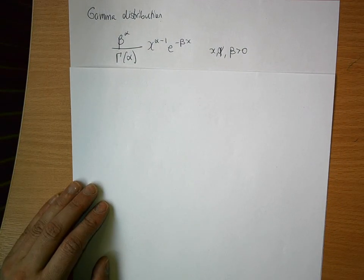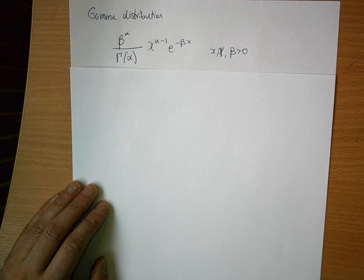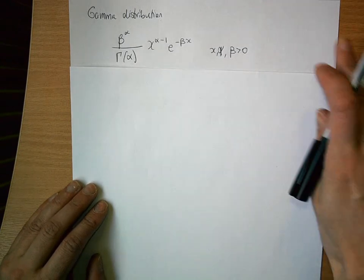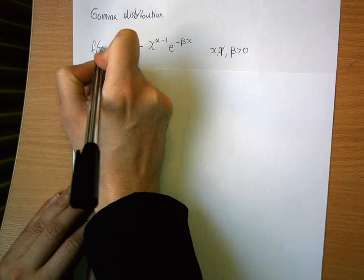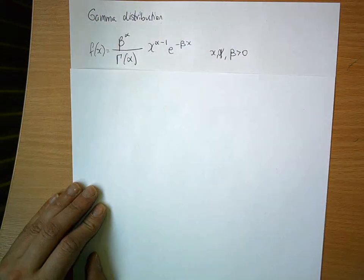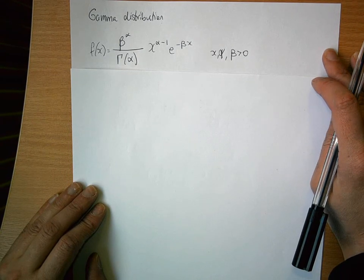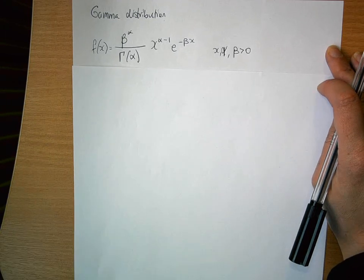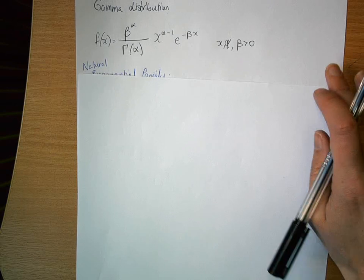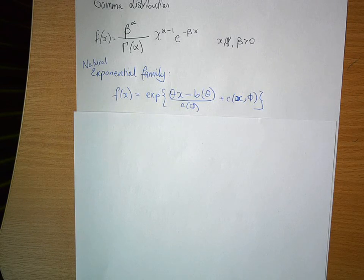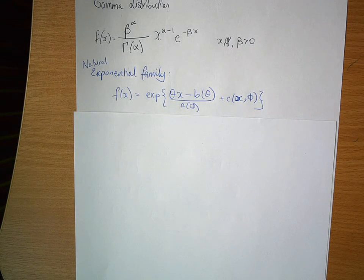Today we're going to show how to prove that the gamma distribution is a member of the natural exponential family of distributions. We're using the gamma distribution in this form: f(x) = beta^alpha / gamma(alpha) * x^(alpha-1) * exp(-beta*x), where x, alpha, and beta are all greater than 0. To show membership in the natural exponential family, you must be able to write the distribution as f(x) = exp( (theta*x - b(theta)) / a(phi) + c(x, phi) ).